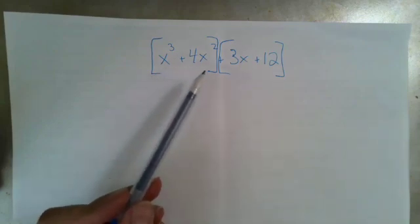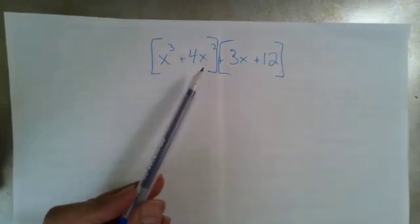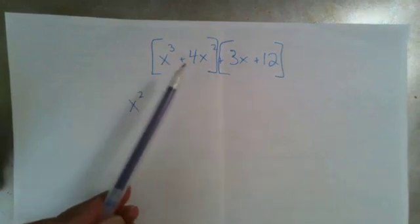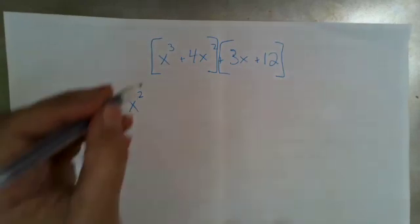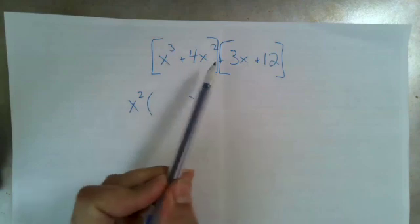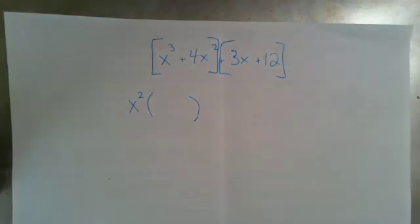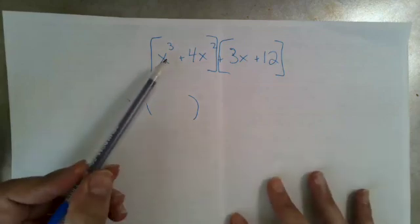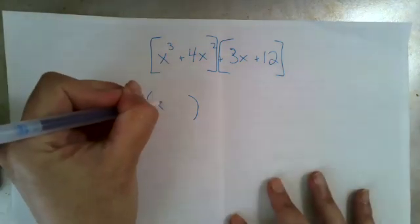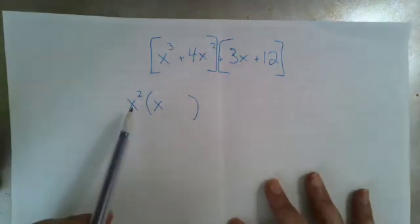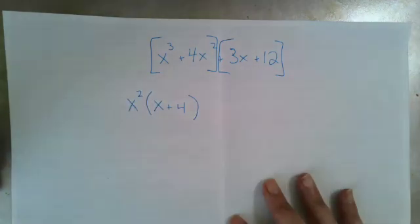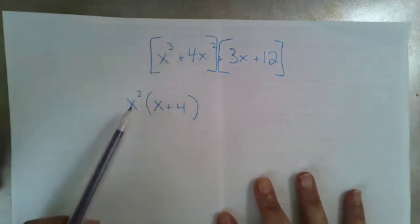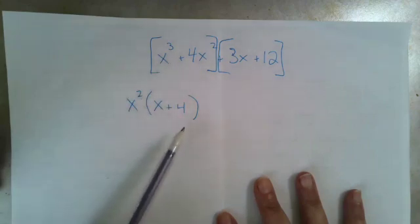When I look at the x's in these terms, I have an x cubed and I have an x squared. So x squared is the greatest common factor to both of those. And I have a 1 and a 4, so 1 is the greatest common factor. When I factor x squared out of x cubed — and factor means divide — what's left? When I divide x cubed by x squared, I'm left with an x. And when I divide 4x squared by x squared, I'm left with a positive 4. If I were to distribute this back in, x squared times x gets me back to x cubed, and x squared times 4 gets me back to 4x squared. So you know you've done that right.